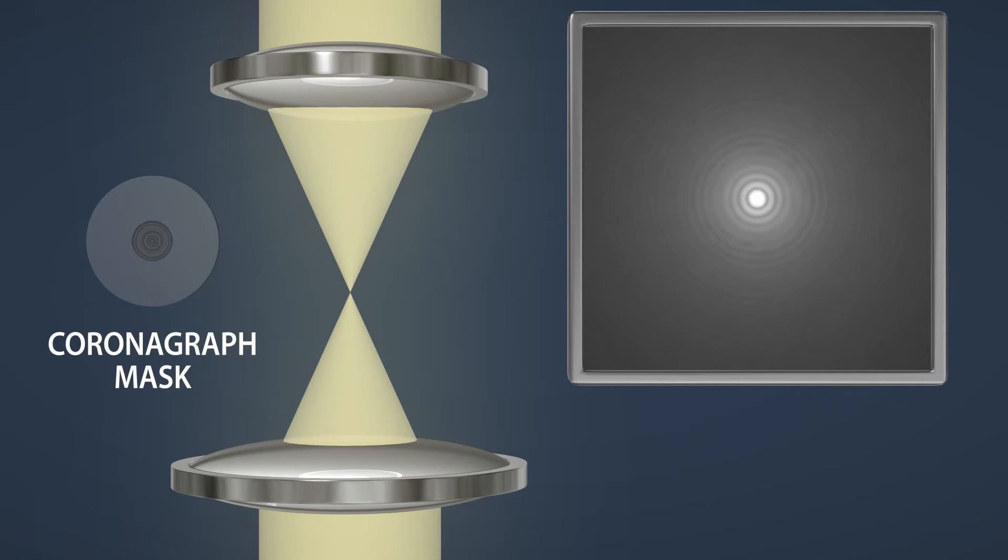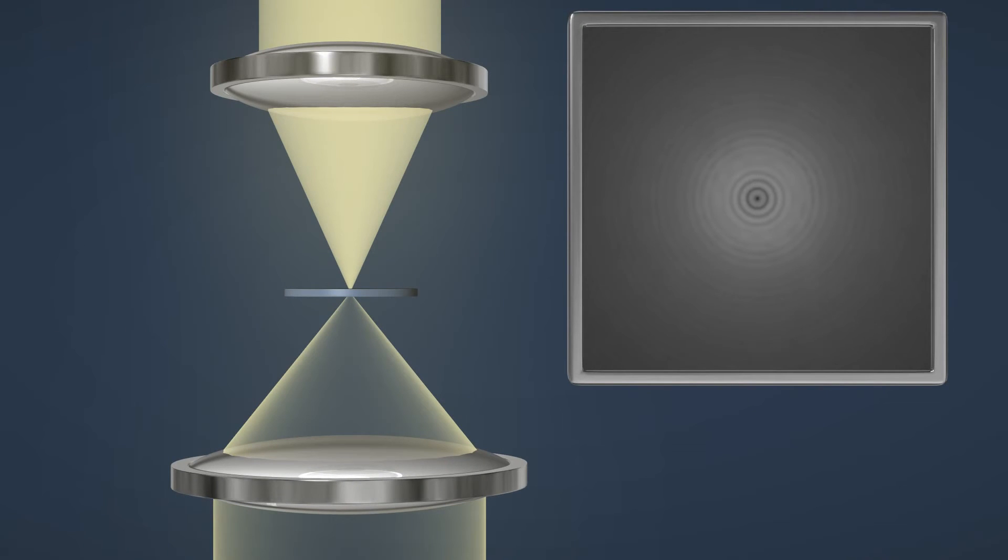The mask is carefully designed to redirect the starlight that it does not block off to the edges of the beam. As we see on the monitor, the inserted mask has already decreased much of the central starlight.